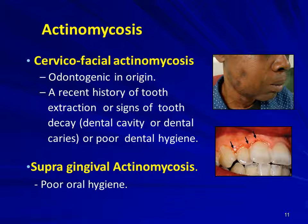The first type of actinomycosis is cervicofacial actinomycosis. The main reason is odontogenic lesions — oral lesions, a recent history of tooth extraction, signs of tooth decay like dental caries, or a history of poor dental hygiene for months or years. You can see the photograph showing recovery from cervicofacial actinomycosis with multiple openings healed by scarification.